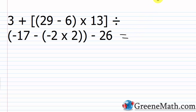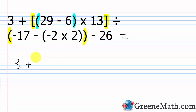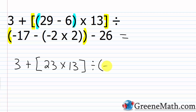I'm going to start inside of grouping symbols. I have brackets here and parentheses here. I'm going to start inside of these brackets. Once I get inside, I'm looking at the innermost set of grouping symbols, which contains 29 minus 6. So 29 minus 6 is 23. I'm going to put 3 plus, and then inside of brackets, 23 times 13. Then this is going to be divided by, inside of parentheses, negative 17 minus, and then inside of parentheses, negative 2 times 2. And then we're subtracting away 26.